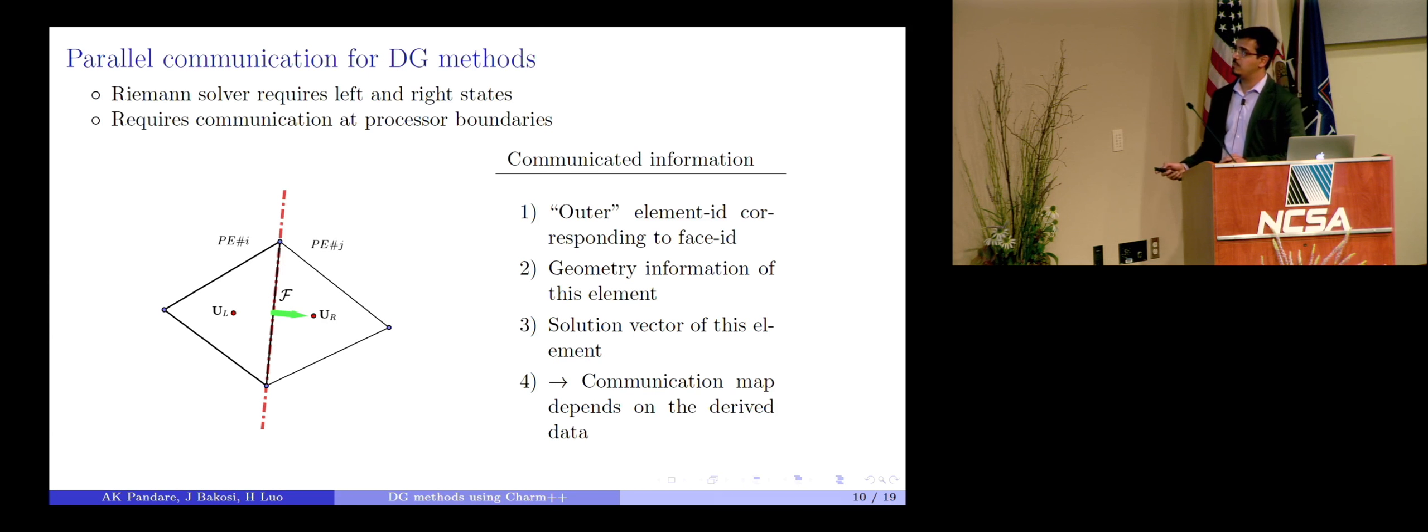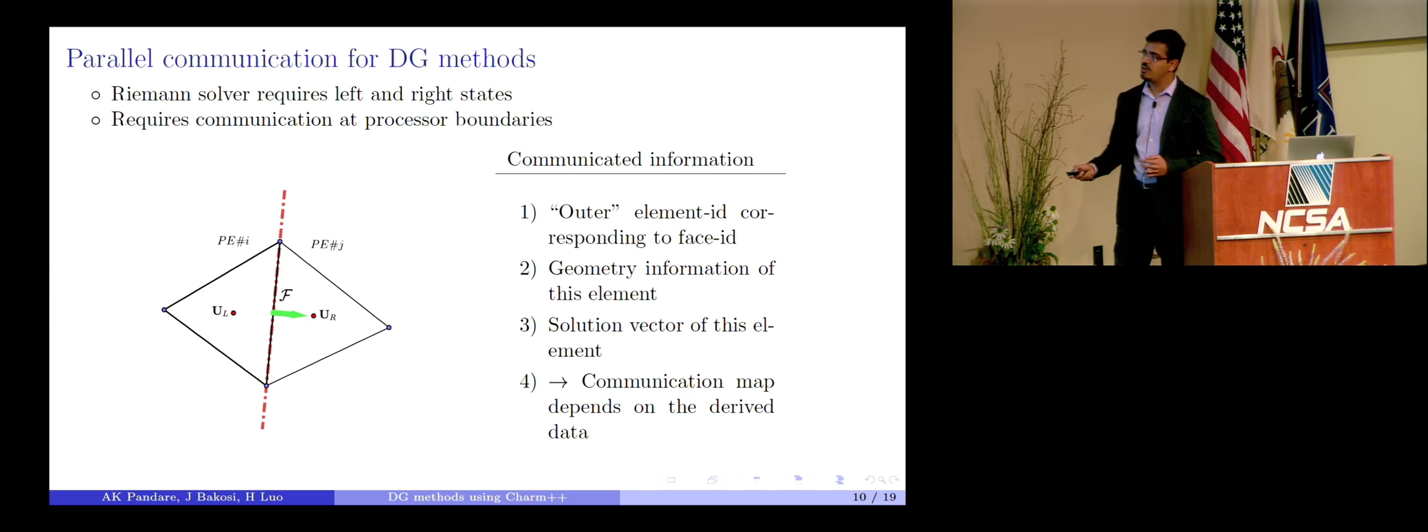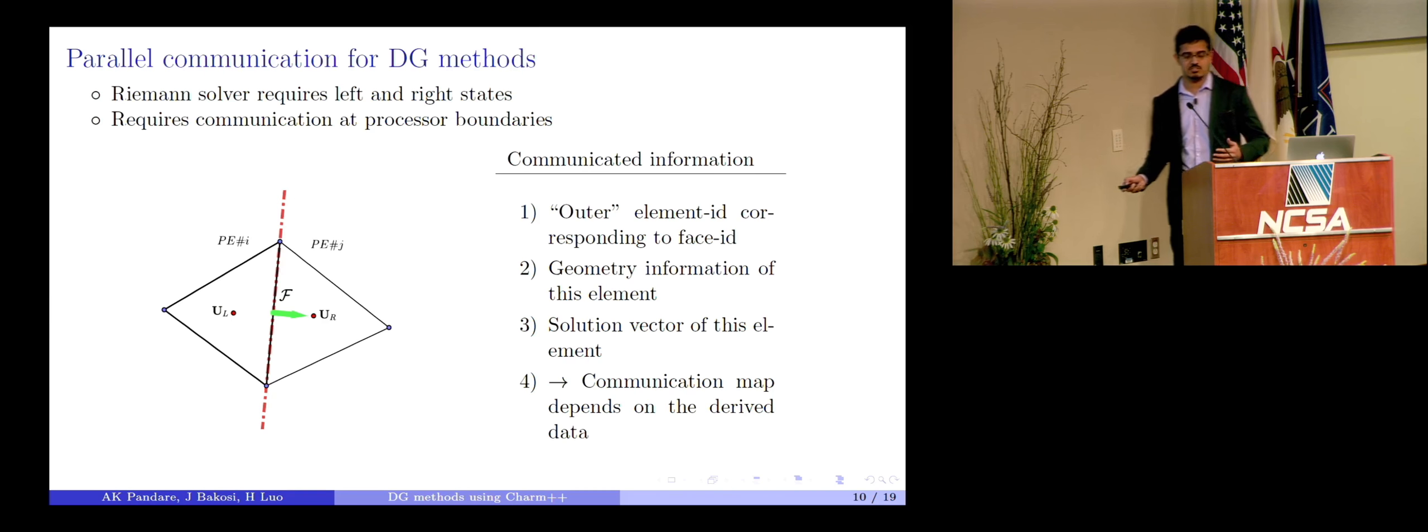And this is fairly regular, but when we go to higher order, this is going to become more important. So basically, let's look at what communication patterns or what communication information we need right now. Right now, we just need the outer element ID. So basically, if I'm on processor j, for example, I would need the cell ID of this guy. Then I would need the geometry information, like maybe the volume of this cell, maybe the coordinates for higher order reconstructions. And we would also need the solution of that cell, because that would help us solve the Riemann problem there. So basically, what I'm saying over here is the communication, the successful communication depends on the correct communication map that we set up across processor boundaries.